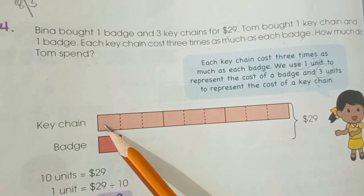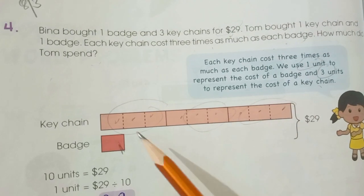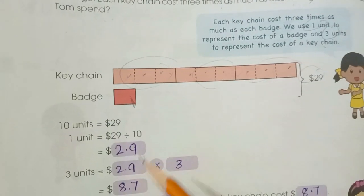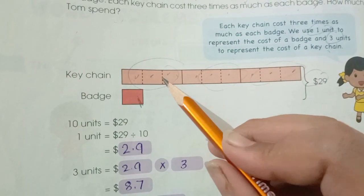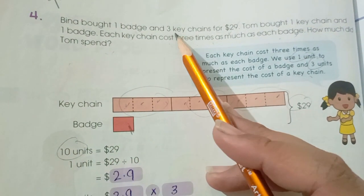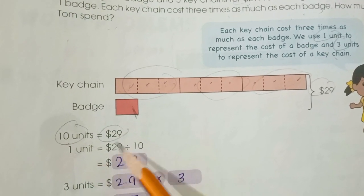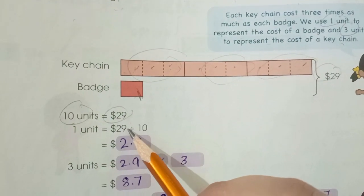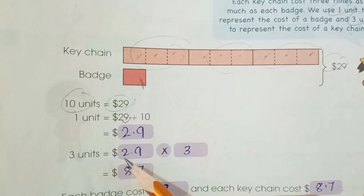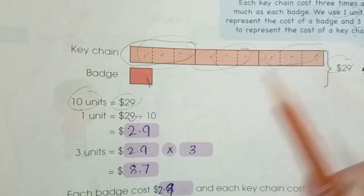We have one unit for the badge and three units for each keychain. Bina bought one badge and three keychains: that's 1 + 3×3 = 10 units total. Total amount paid is $29. So one unit equals 29 ÷ 10 = $2.9. Each keychain has three units: 2.9 × 3 = $8.7.